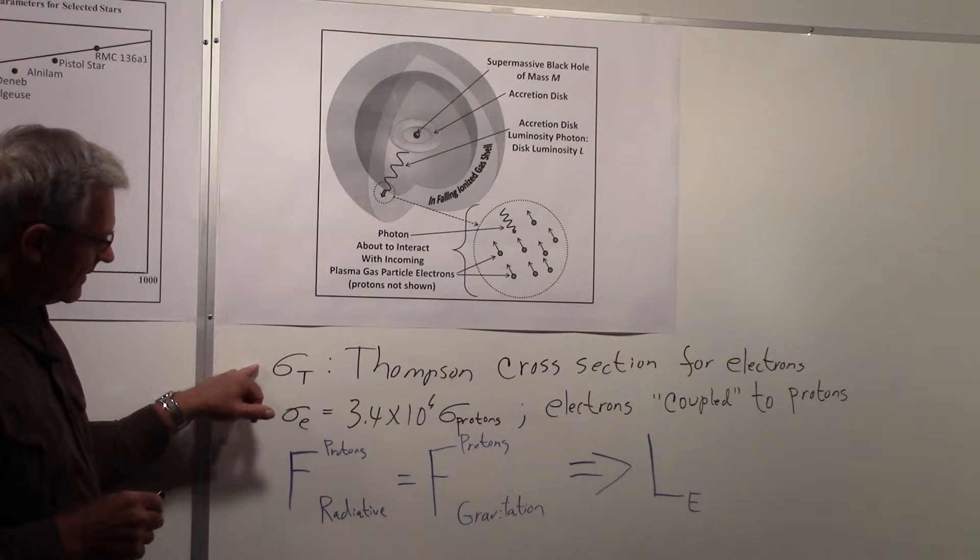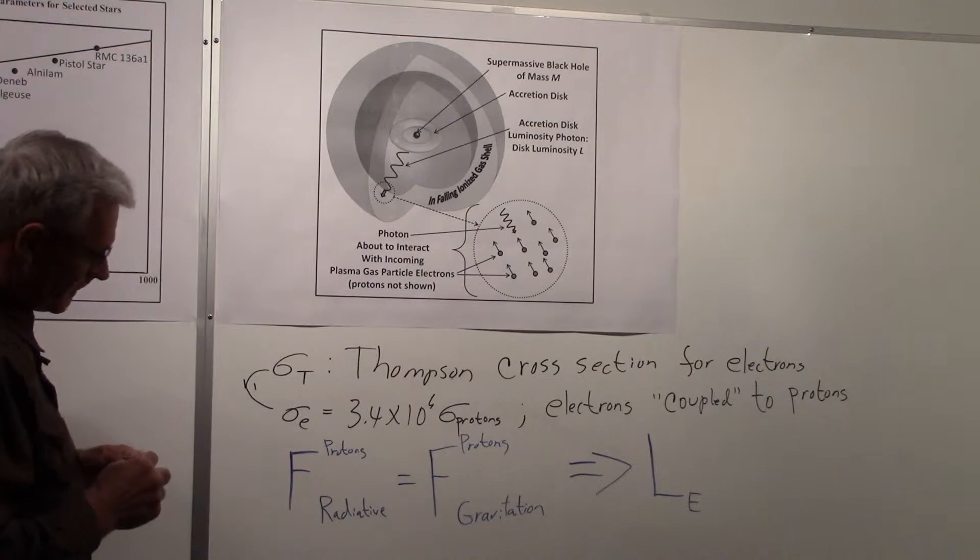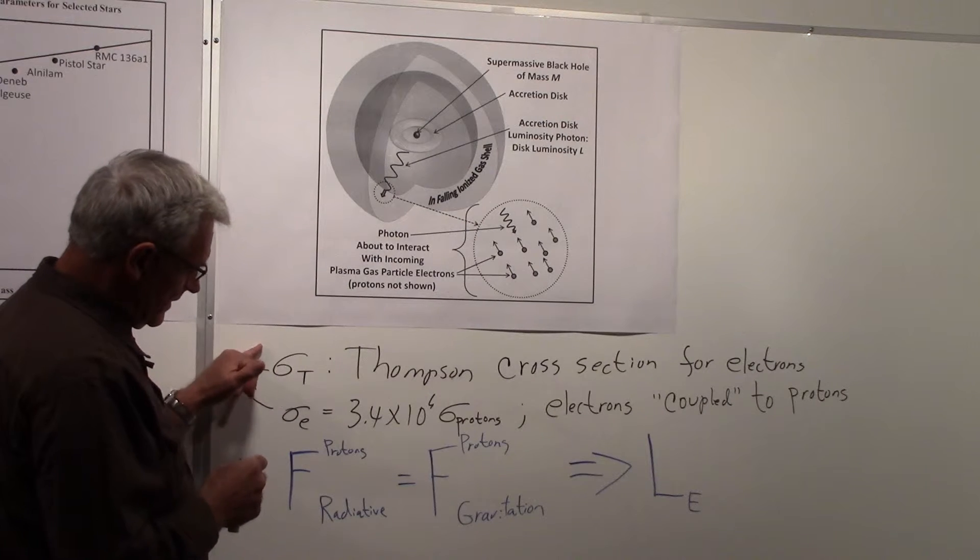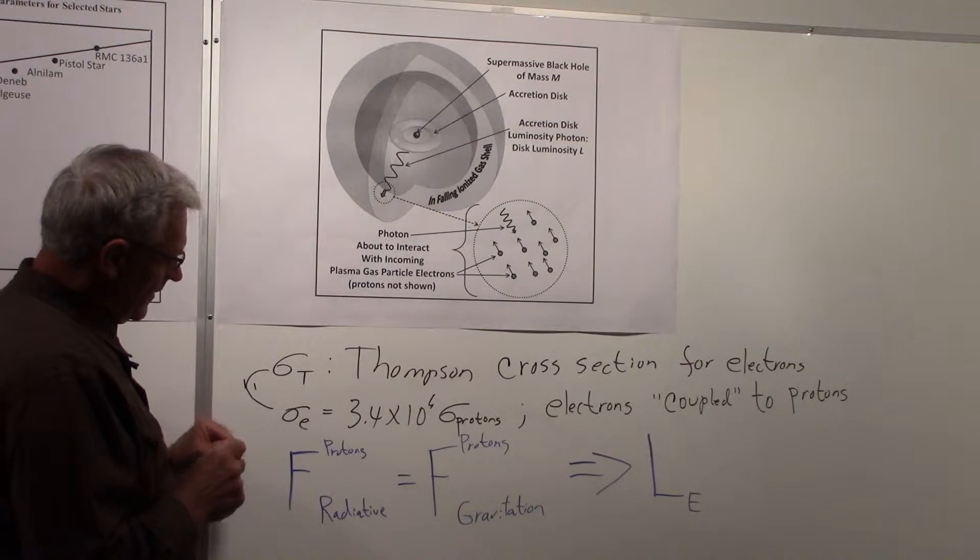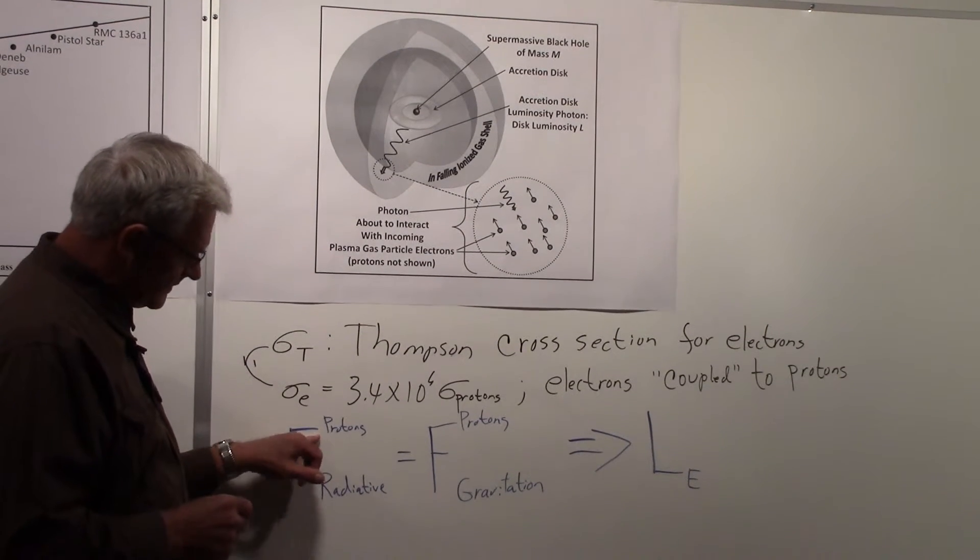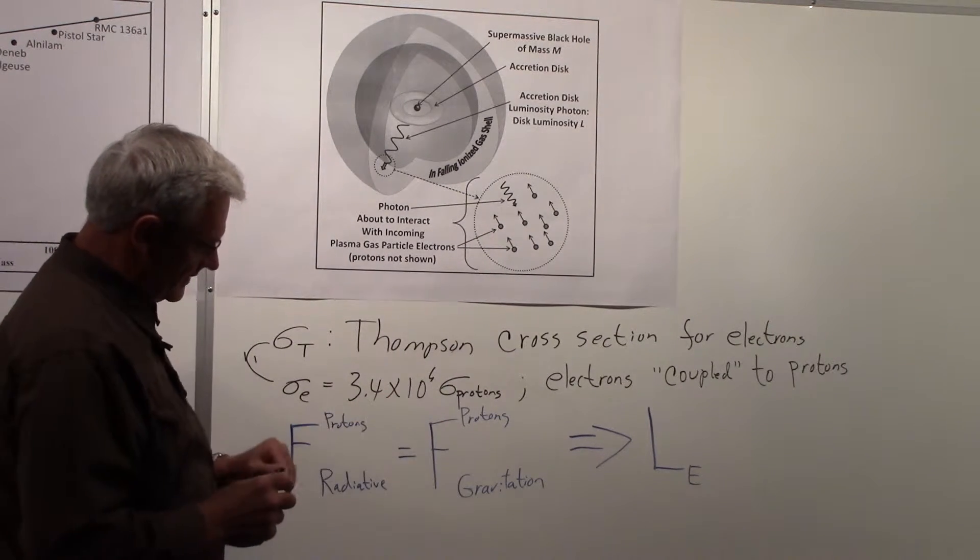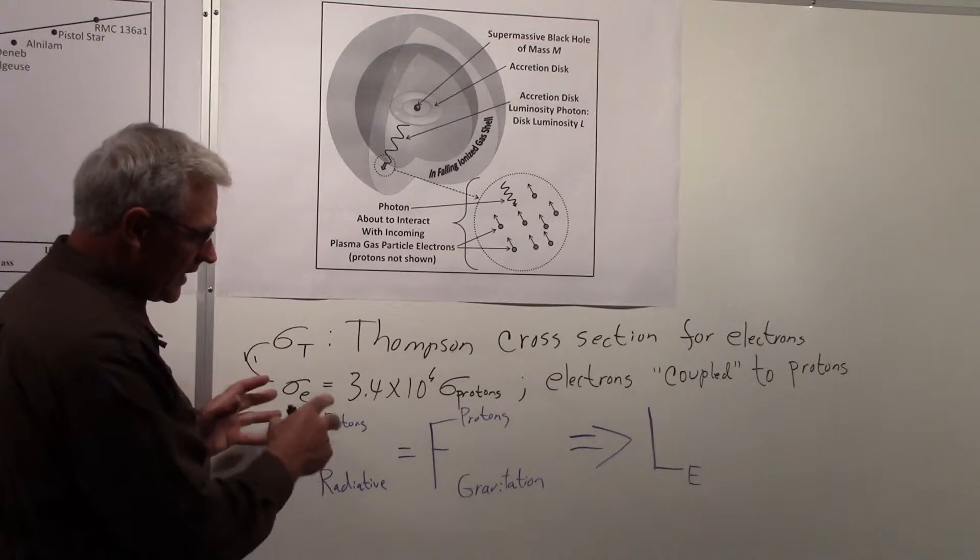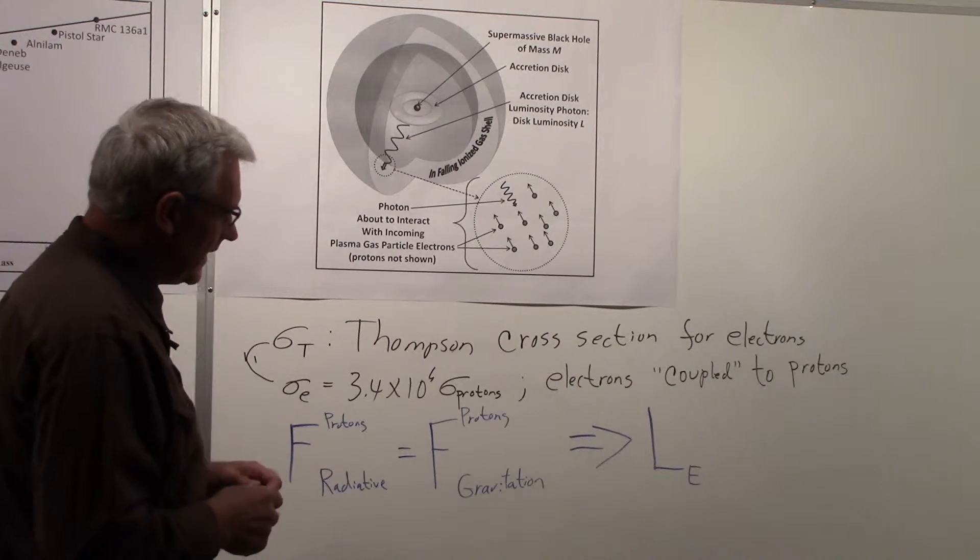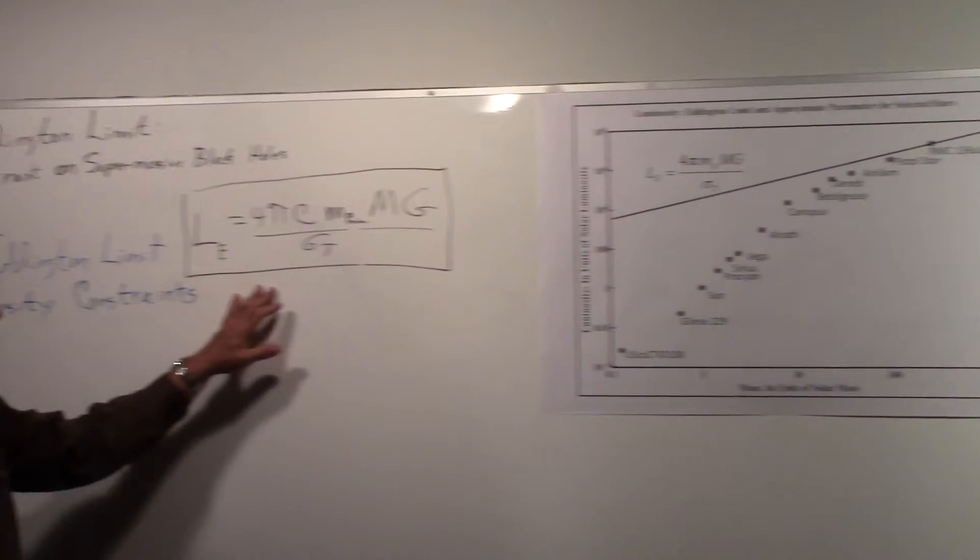What we showed was that by using the cross-section we could show that the radiative force on protons could be set equal to the gravitational force on protons. In working that out, we could come up with an expression for the luminosity, and that's the Eddington limit on luminosity, and that's this expression over here.